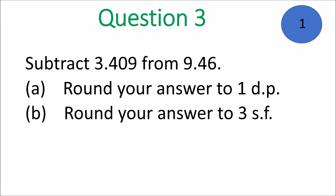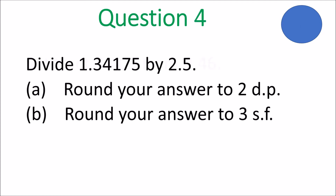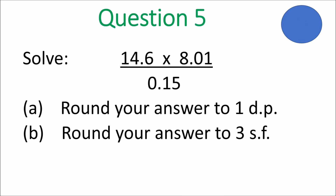These are all typical exam questions. Question 4: Divide 1.34175 by 2.5 — please use your calculator. Round your answer to two decimal places. Round your answer to three significant figures. And question 5: 14.6 times 8.01 on top, and you divide that by 0.15. Round your answer to one decimal place. Round your answer to three significant figures.